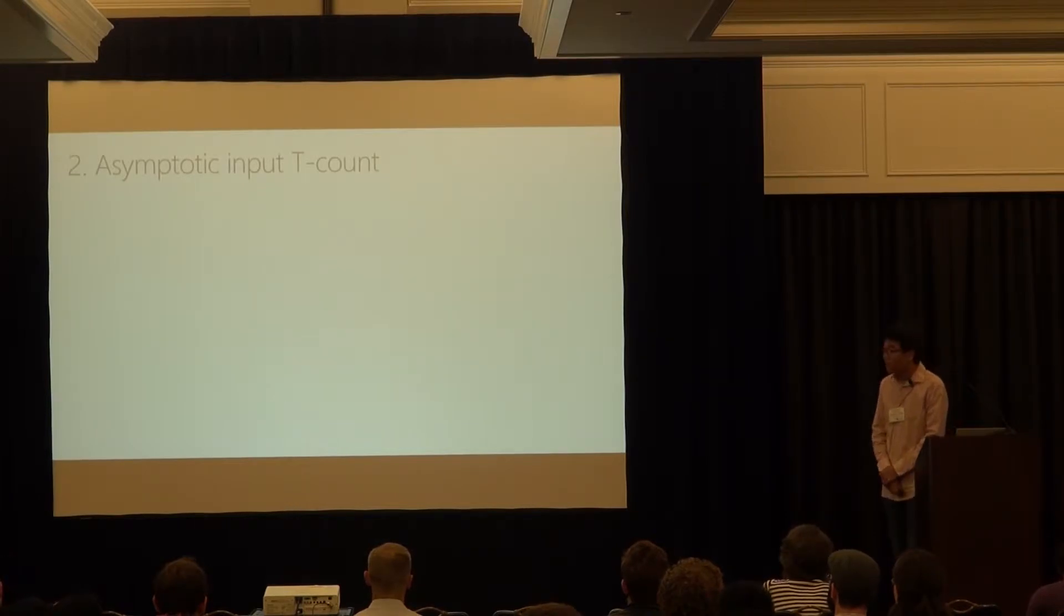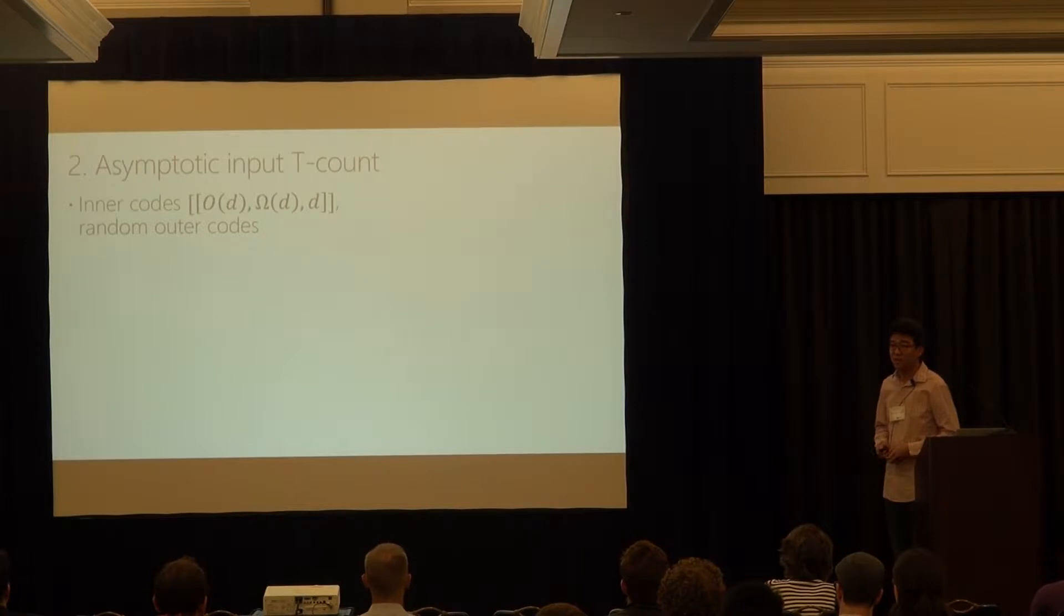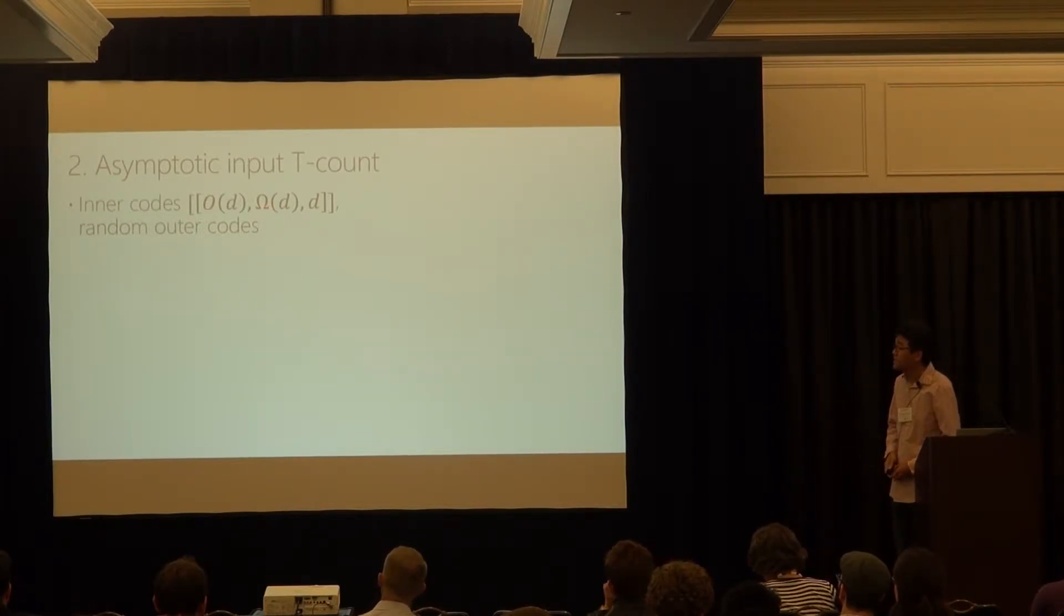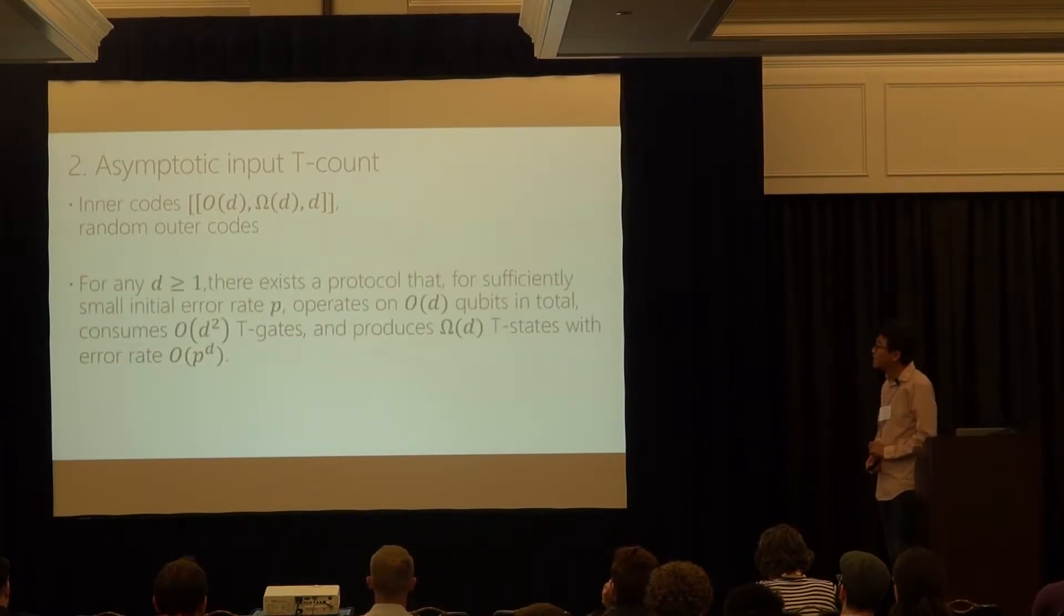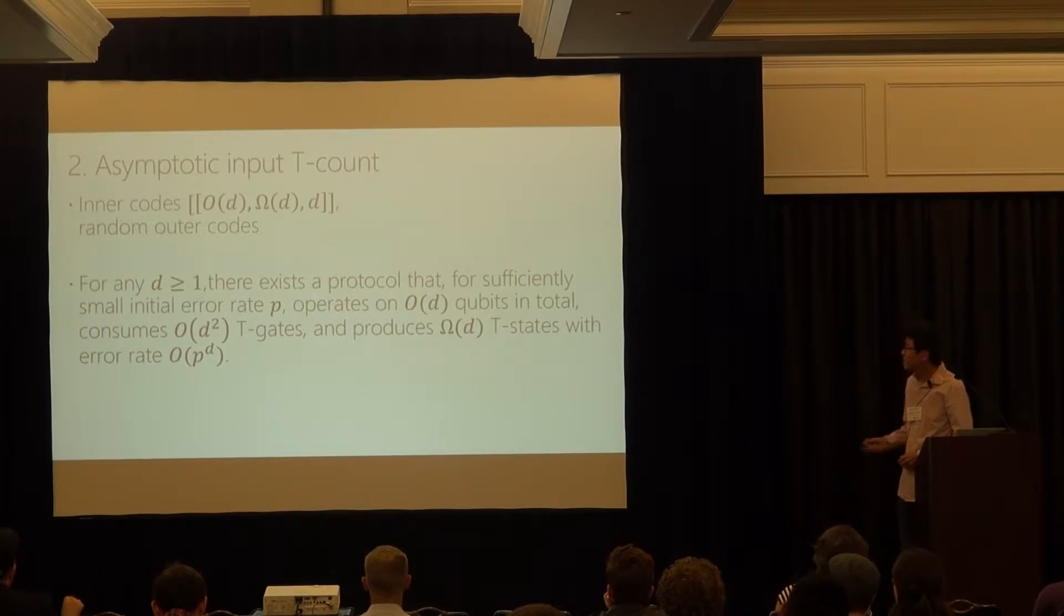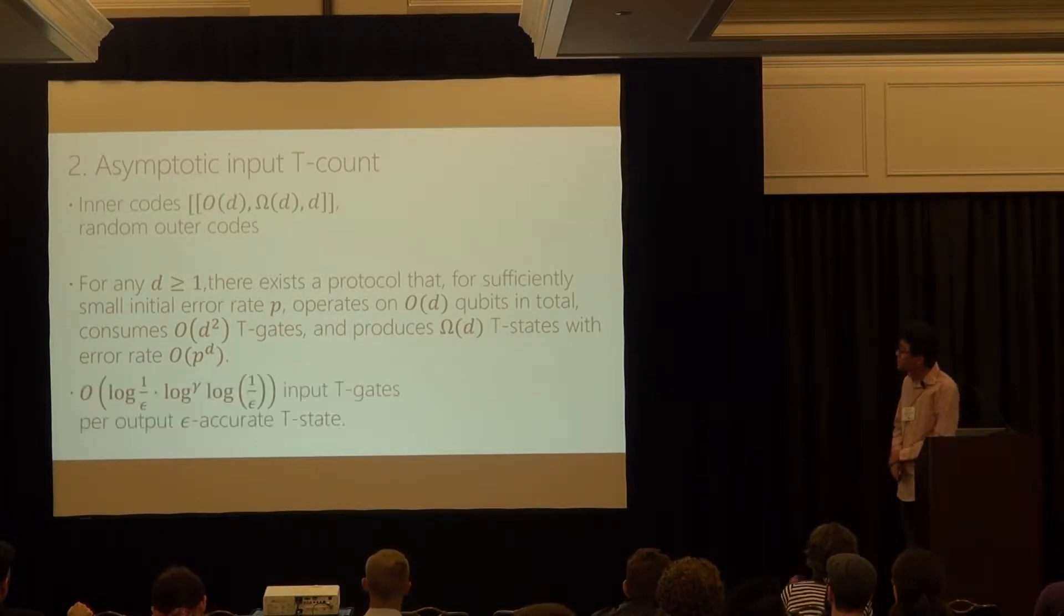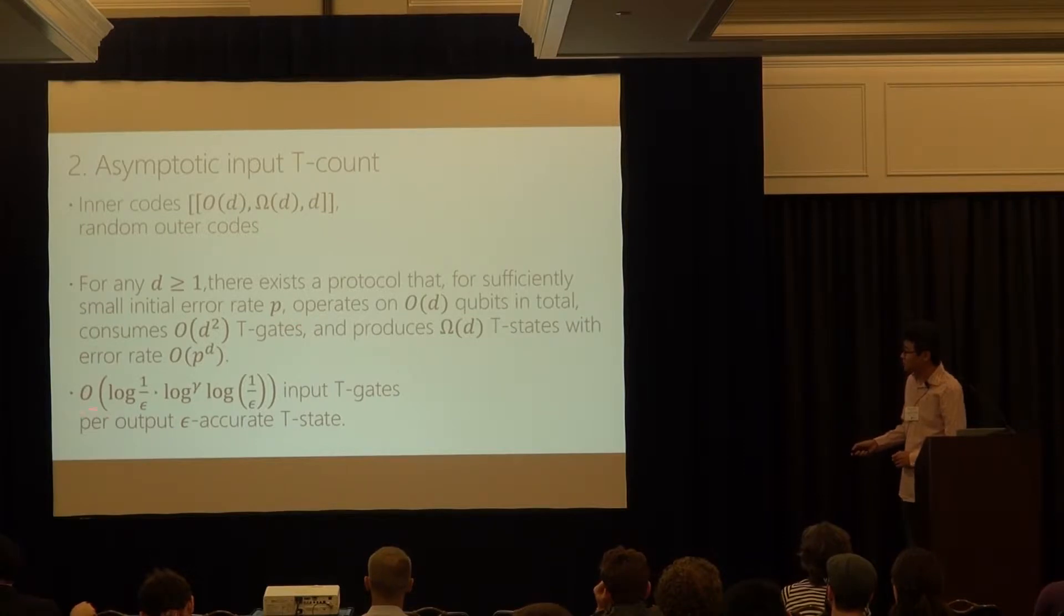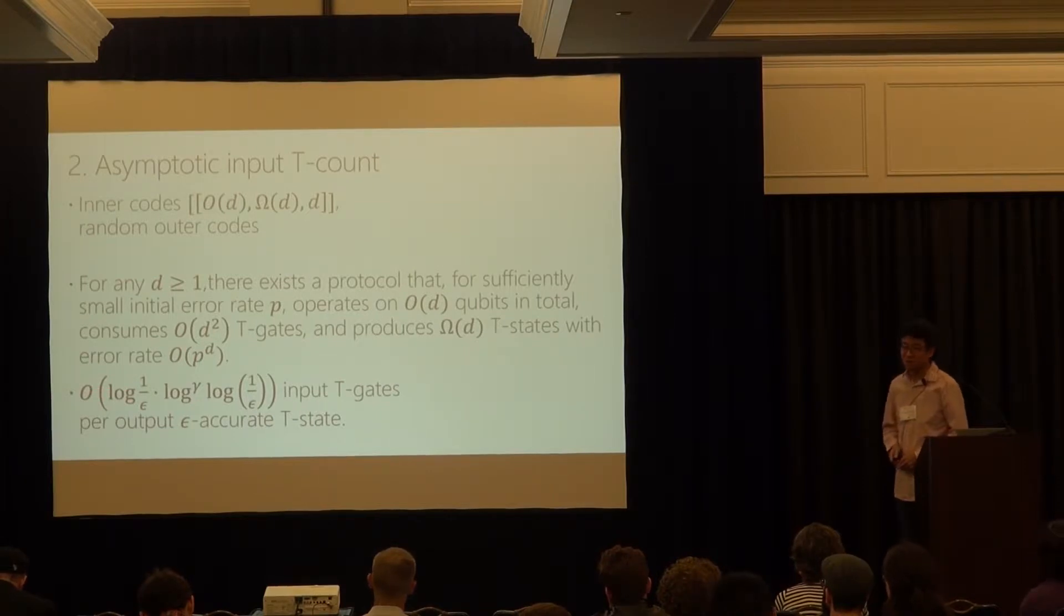So asymptotically this is one of the best, the previous prior art is due to Jones where it was D was restricted to be a power of two and it was not just D, but it was D plus one. So we removed the plus one and we enlarged the scope of the distance part. And you can think of the second code limit where you use good inner codes meaning that the number of physical qubits and the number of encoded qubits is both proportional to the code distance and you just randomly chose what qubits to check. And then the theorem says that for any distance, there is this protocol that it operates only over order of D qubits, no larger and it consumes order D square T gates. And produces D T states with the error rate P to D.